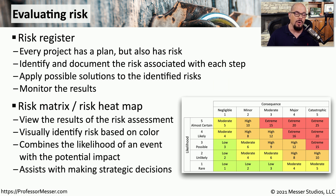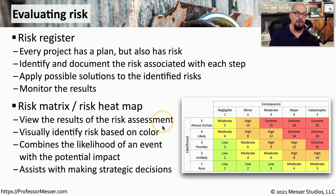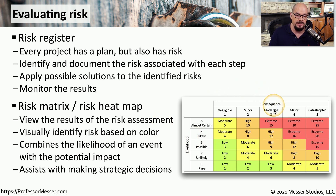You might even want to quantify this with a risk matrix, or what we call a risk heat map. This allows you to visually determine the risk assessment, and you can see how risky something might be based on the color of the risk matrix. This allows you to combine the likelihood of an event with the consequences of that event, and you can use the same scales to compare different events to each other.